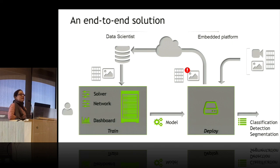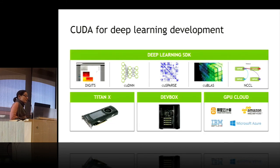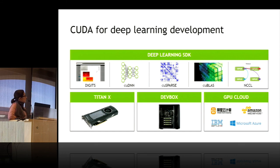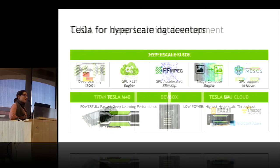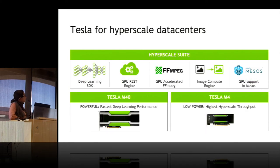That model deployment is basically pushing a model file and pressing a button. We have several software projects: Digits — a GUI for prototyping; cuDNN — a deep learning library; cuSPARSE — sparse matrix operations; cuBLAS — the familiar linear algebra library; and NCCL. For development on the workstation you have the Titan X and the DevBox. For large-scale deployments we offer the same infrastructure with a deep learning SDK, a GPU inference engine, accelerated video, a compute engine, and GPU support in Mesos.